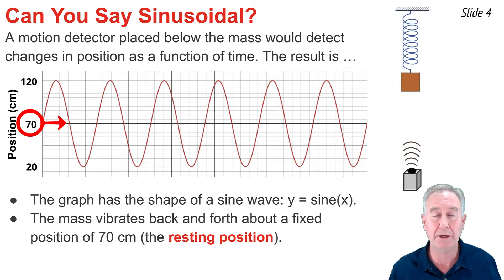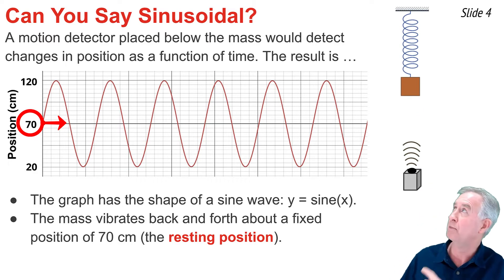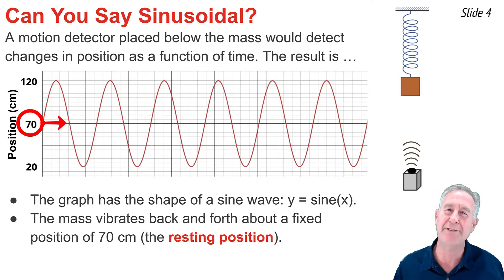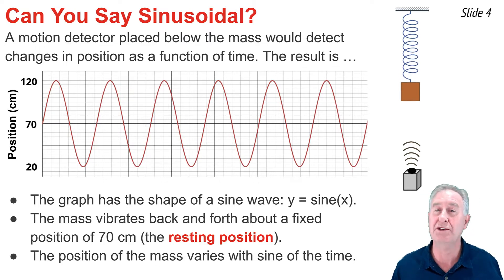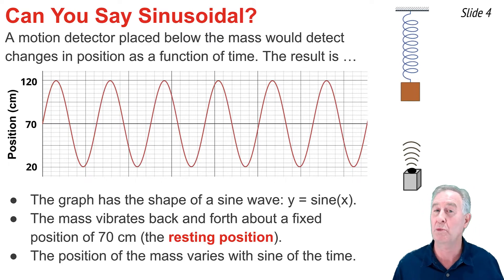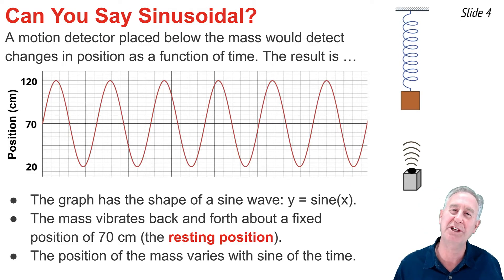It's vibrating back and forth from 20 centimeters to 120 centimeters, about the fixed position of 70 centimeters. This 70 centimeters position is known as the resting position — it's the position that this mass would assume if it were not vibrating. The position of this mass varies as a function of the sine of the time. Any two quantities in which one varies as a function of the sine of the other are said to have a sinusoidal relationship.